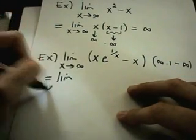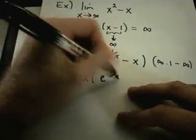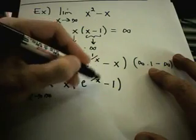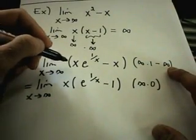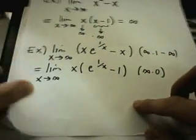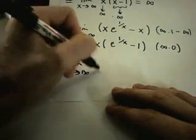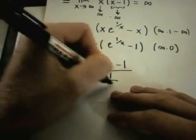Just like in the last problem, to get started I'm going to factor out an x. Now I have e to the 1 over x minus 1. Notice again as x goes to infinity, I'm going to have e to the 0, or 1 minus 1 in the parentheses — I'm going to have infinity times 0. So now I've turned it from one of these indeterminate differences into an indeterminate product. I'm going to put one of these in the denominator, leaving the e to the 1 over x minus 1 in the numerator — I usually leave the more complicated expression on top.